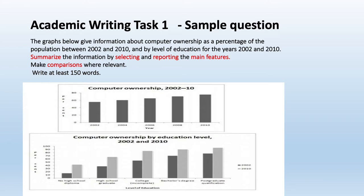This is a sample question for IELTS Academic Writing Task 1. The data is shown in two bar graphs. The topic to be discussed is computer ownership between 2002 and 2010. This topic is divided into two groups: one is as a percentage of the population and the other is by level of education. Your task is writing a summary of the provided data by selecting main features including comparisons where relevant. It is vital to concentrate on key instructional words such as summarize, selecting, reporting, main features, and comparisons.